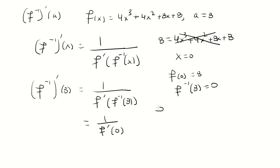Now f of x is 4x cubed plus 4x squared plus 8x plus 8, so the derivative is 12x squared plus 8x. Plugging in 0, we end up with 8, so the final answer is going to be 1 over 8.